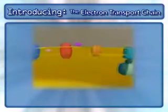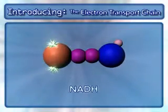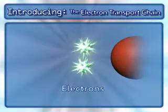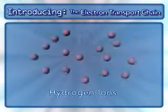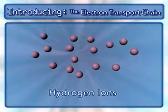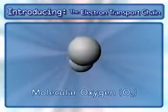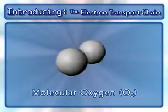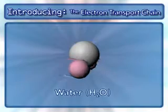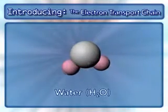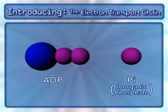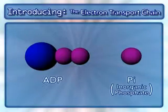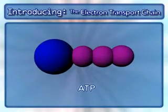Other key components in this process are NADH and the electrons from it, hydrogen ions, molecular oxygen, water, and ADP and inorganic phosphate, which combine to form ATP.